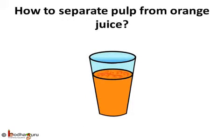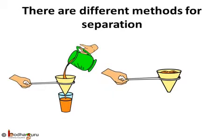Similarly, can we separate pulp from orange juice using hands? No. Of course you can try, but that will be very messy and you won't be able to separate all the pulp. So the easiest way would be to use a sieve or cloth, as we use in the case of tea to separate the tea leaves. The separation was possible using this method because the mixture has two different components — one is liquid, that is orange juice, which can pass through the cloth or the sieve, and the other is in solid state, that is pulp, which won't pass through.